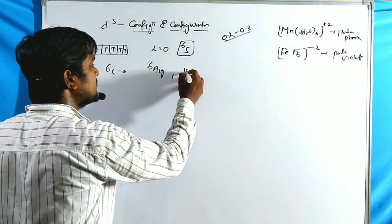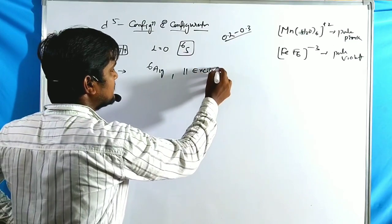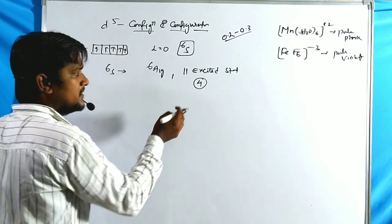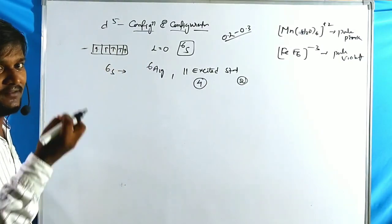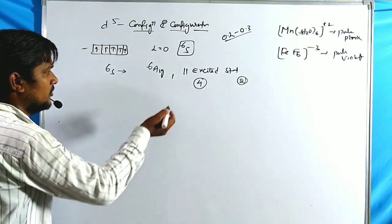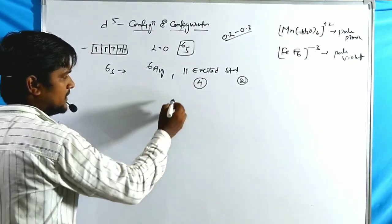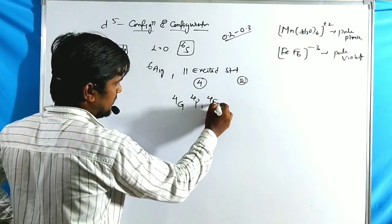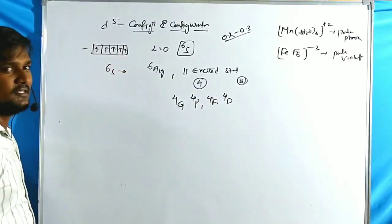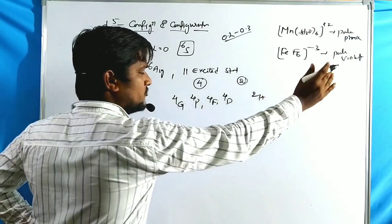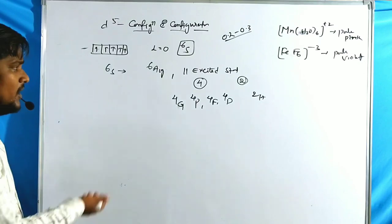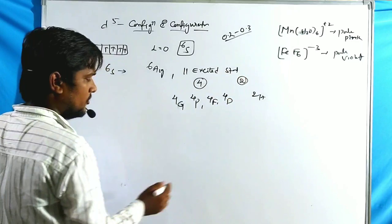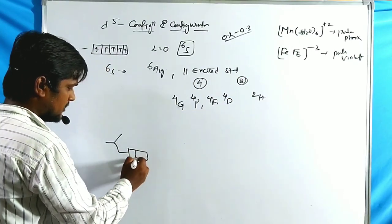The d⁵ configuration has 11 excited states. Some excited states have spin multiplicity 4, and some have spin multiplicity 2. Four of the excited states are ⁴G, ⁴P, ⁴F, and ⁴D. Additionally, there are states like ²H, ²I, ²G, and ²D.